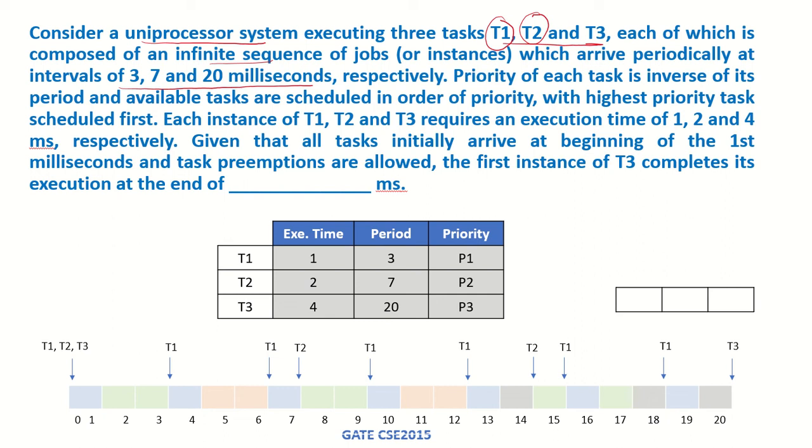The priority of each task is inverse of its period. So if task T1 has a period of 3, task T2 has a period of 7, and T3 has a period of 20, and the priority is inverse of its period, that means whichever task has the smallest period will have the highest priority.